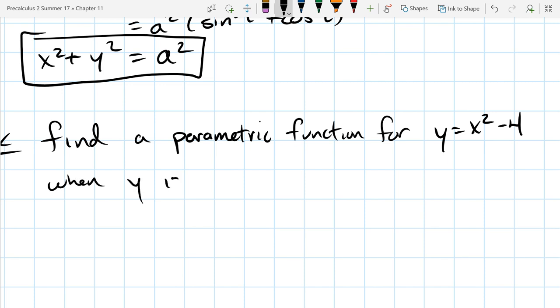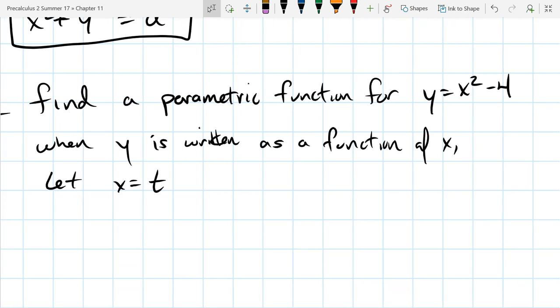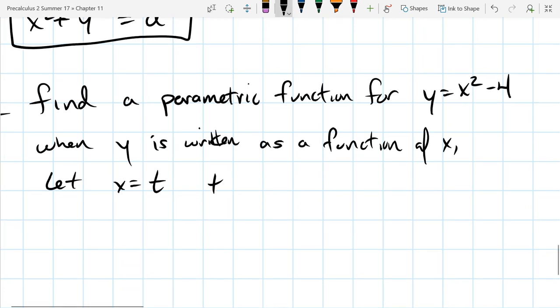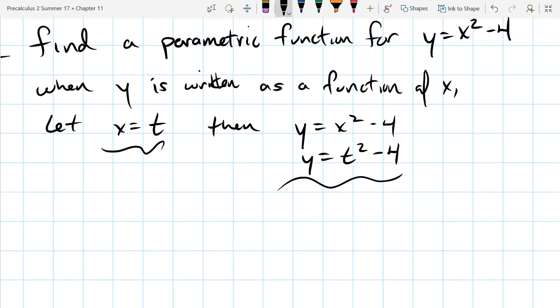So when y is written as a function of x, we're going to just let x equal t. The reason is, if you have x is equal to t, well then what is y? y is x squared minus 4, which is now t squared minus 4. Oh look at that, we got an x and a y parametric equation. That's really all we need.